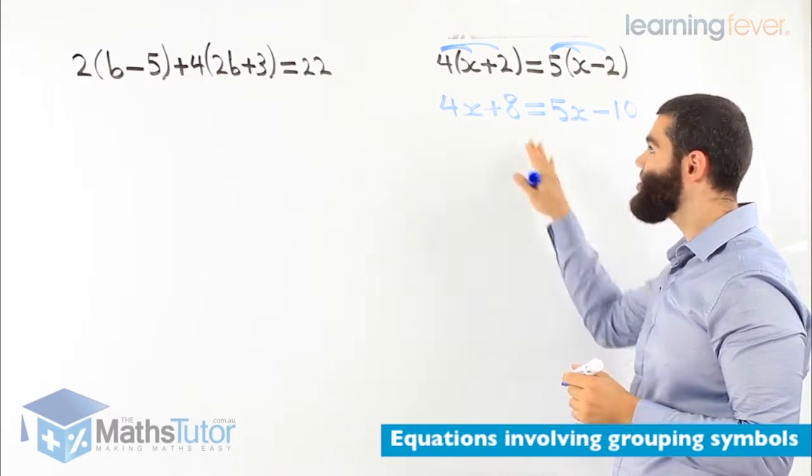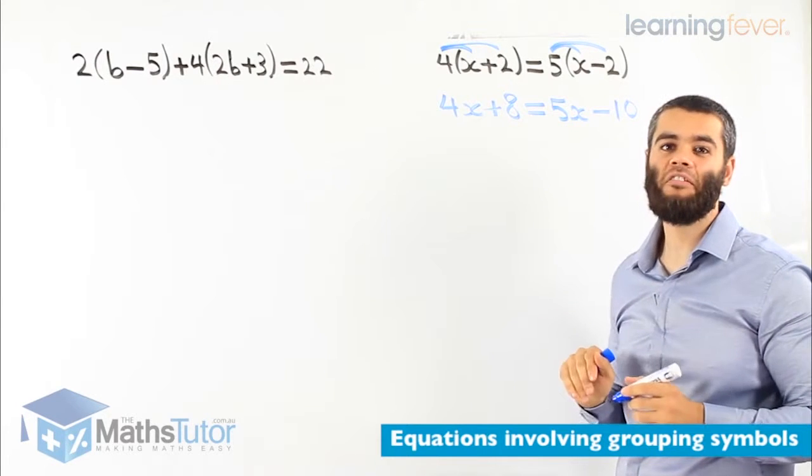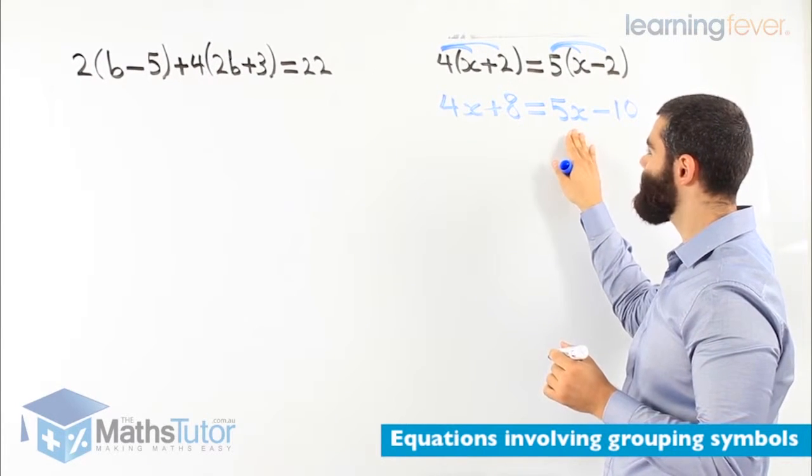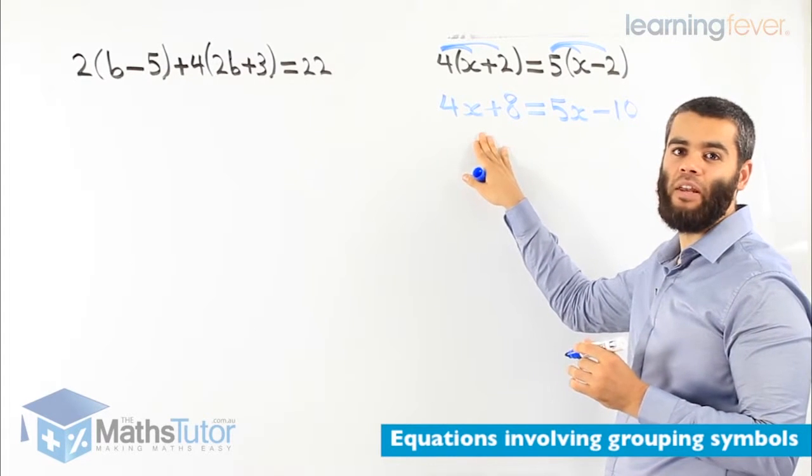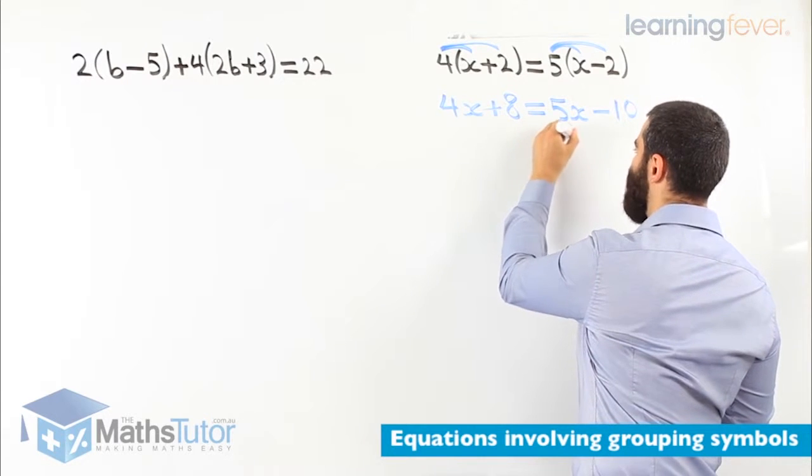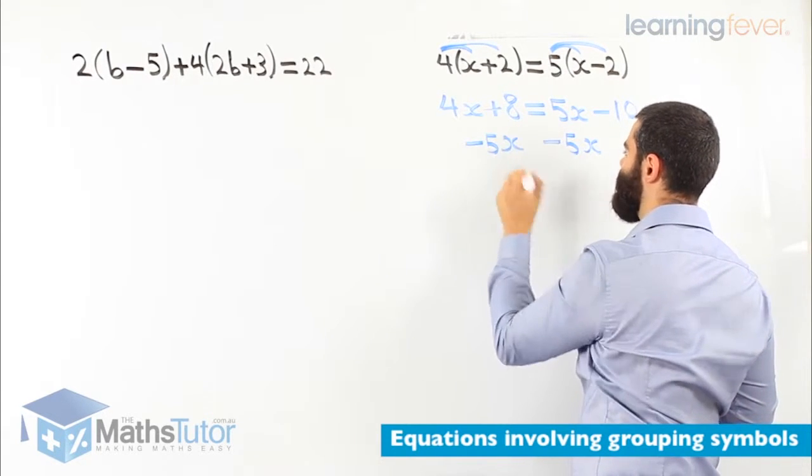4x plus 8 equals 5x minus 10. What do you notice? This is an equation with pronumerals on both sides. So what do we do? We have to get rid of the pronumerals on this side. So we can keep the pronumerals on the left all the time. So 5x minus 5x on this side too.